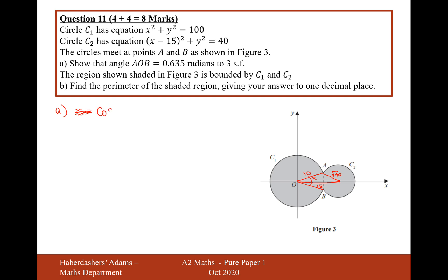Or we could rearrange to: cos X equals B squared plus C squared minus A squared, all over 2BC. B and C are 10 and 15, so it's 10 squared plus 15 squared minus A squared — where A squared is 40, because root 40 squared is just 40 — divided by 2 times 10 times 15. That gives us 19 over 20.